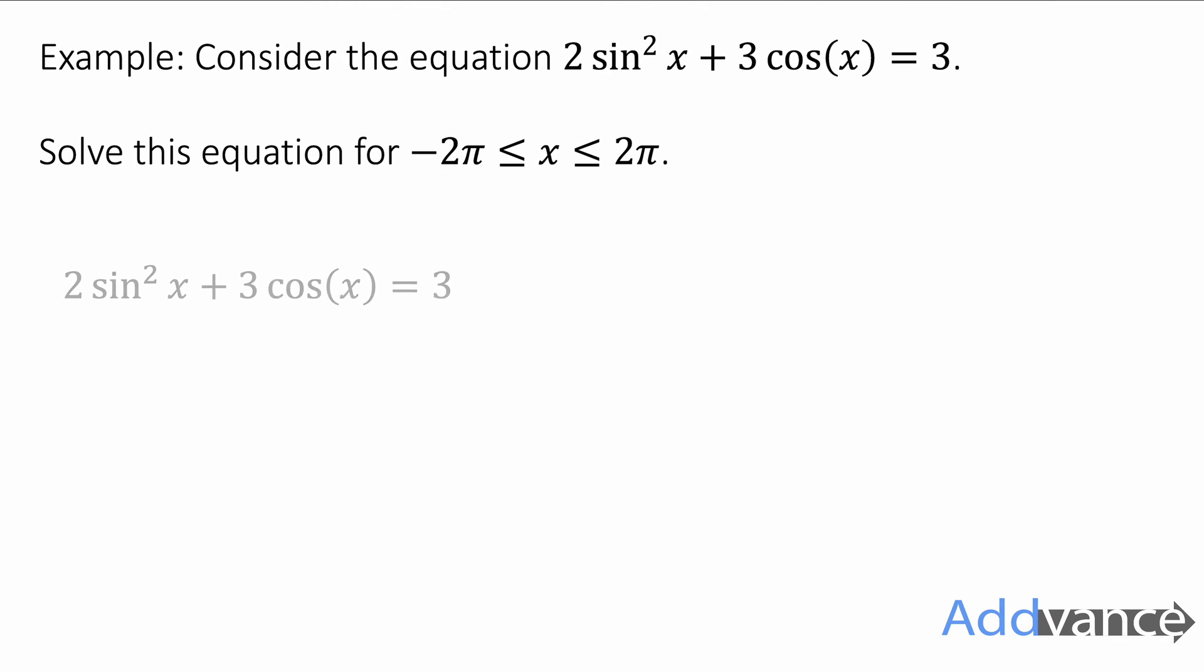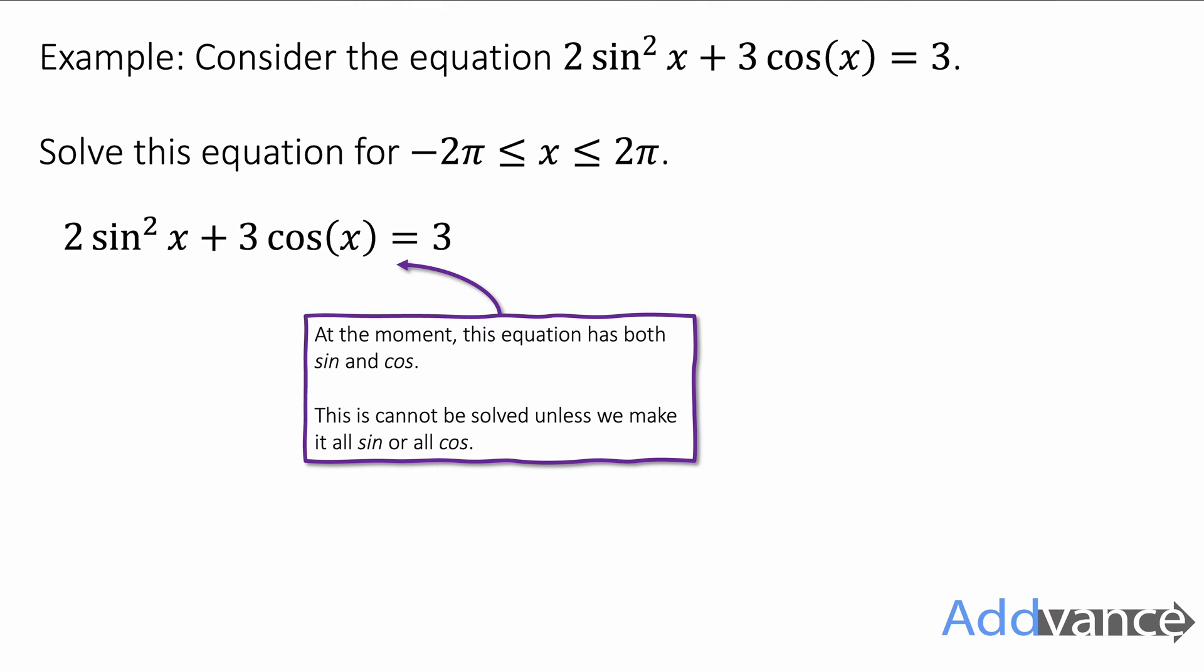Okay so let's look at the example. We've got the equation 2 sin² x + 3 cos(x) = 3. I'm going to solve this equation for -2π ≤ x ≤ 2π. Just a hint, the question is talking about radians because it gives you the bounds of x in radians and we're going into the negatives and the positives. There's going to be most definitely repeated solutions here so you're going to have to think about cast diagrams.